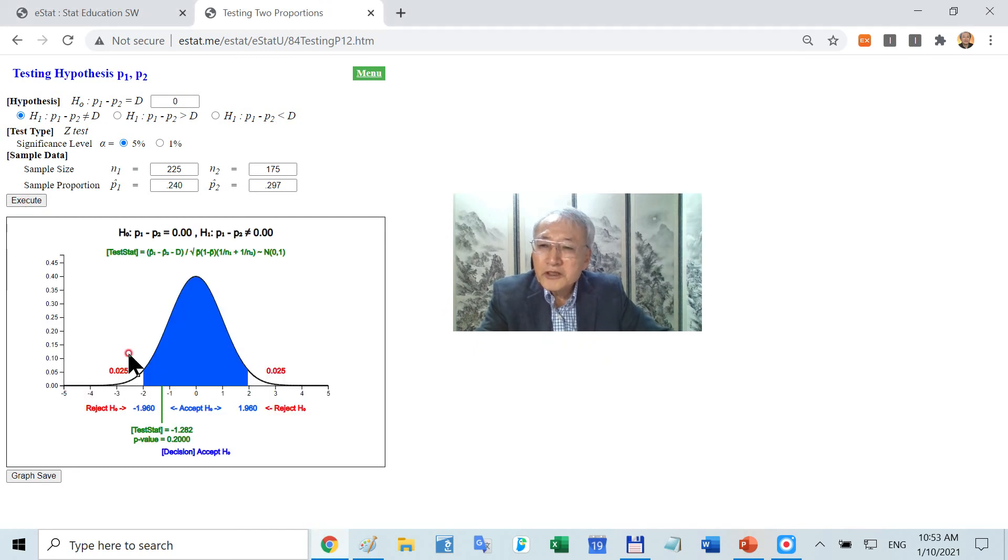Then if you click execute button, they are going to generate the normal distribution sample statistic. It looks like this: P1 hat minus P2 hat. D is, in this case, 0. Therefore, using P bar, it looks like this. Test statistic located here. Therefore, you cannot reject H0.